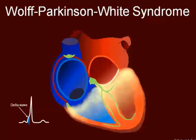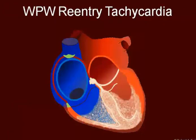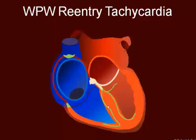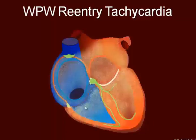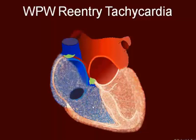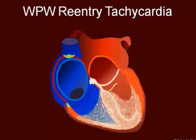Now, this can go wrong, usually because of a premature contraction. In this example, we're coming down, moving back up, coming through the bundle of Kent, back around, and through. Come around, come around, and we set up a loop. This is an orthodromic loop, because it's coming from the ventricles through the accessory pathway, back down through the AV node. An antidromic loop can also occur in which it comes back up this way, down through the bundle of Kent, and then back up through the AV node. That is more rare.